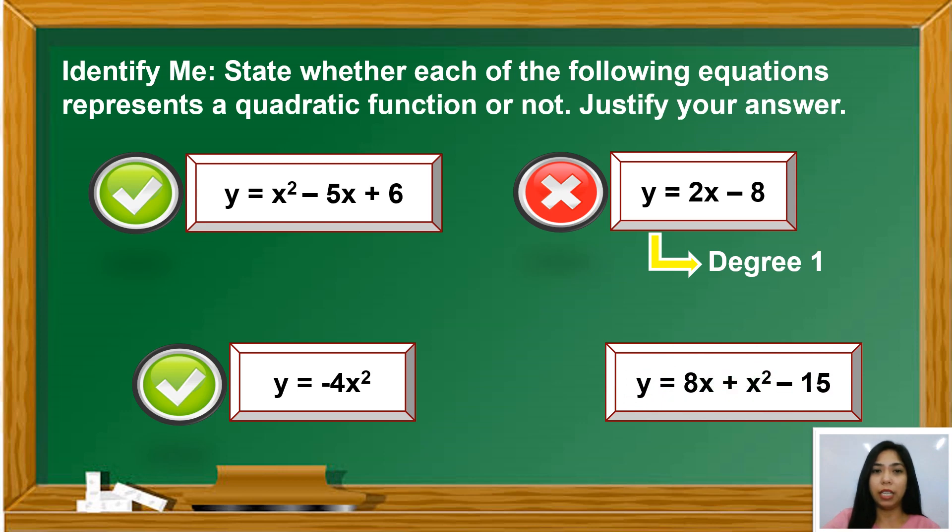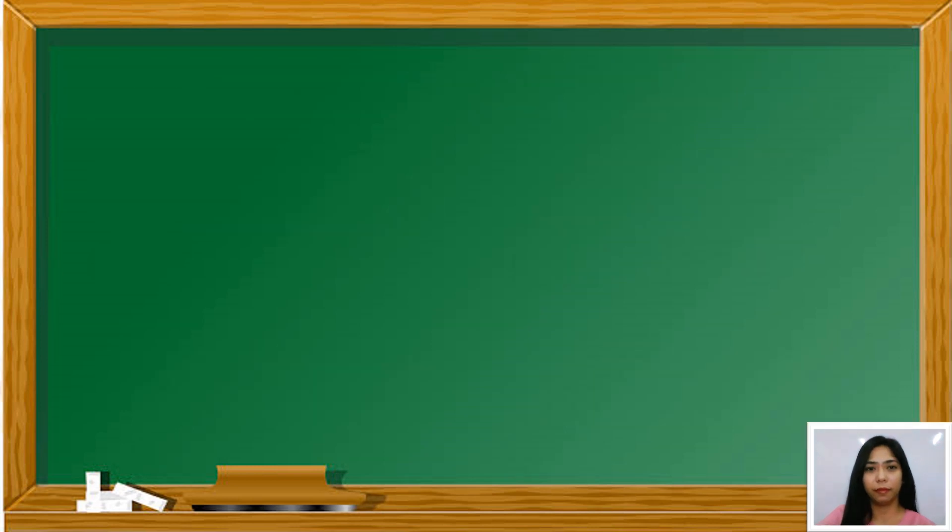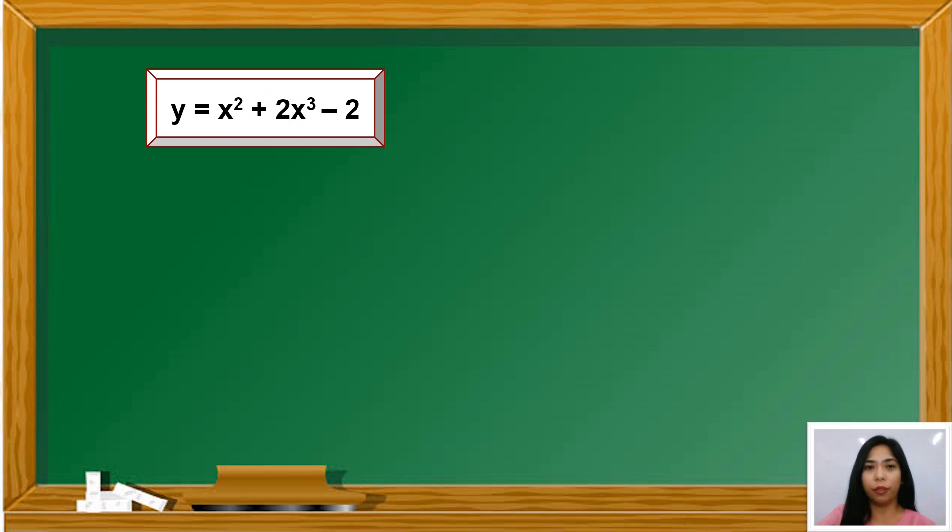How about Y equals 8X plus X squared minus 15? Though it is not written in standard form, the first term is the linear term followed by the quadratic term. It is also a quadratic function because the highest degree of the polynomial function is 2. How about Y equals X squared plus 2X cubed minus 2? It is not a quadratic function because the highest degree of the polynomial is 3.